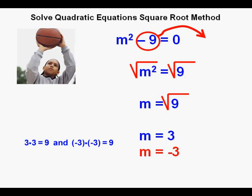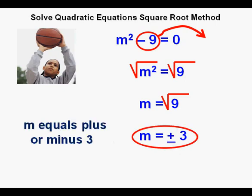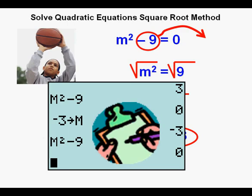Although two solutions can be written like this, it's usually written like this with a plus sign over a minus sign. Verbally, we say that our answer is m equals plus or minus 3. We can plug back both 3 and negative 3 for m and see that both are correct solutions. Check.